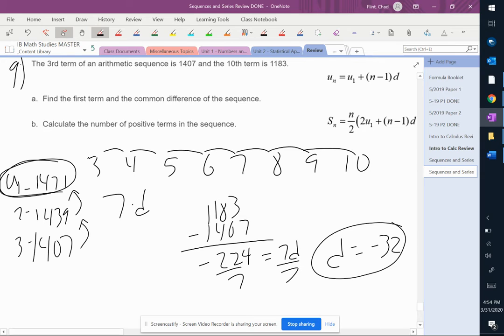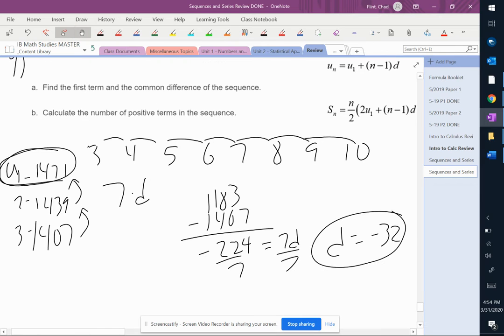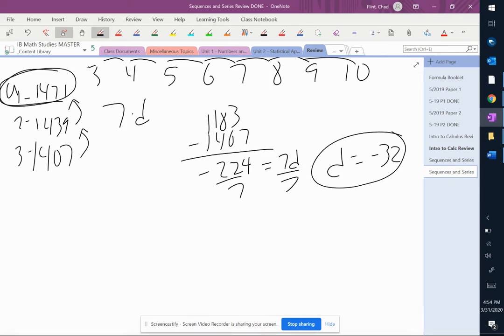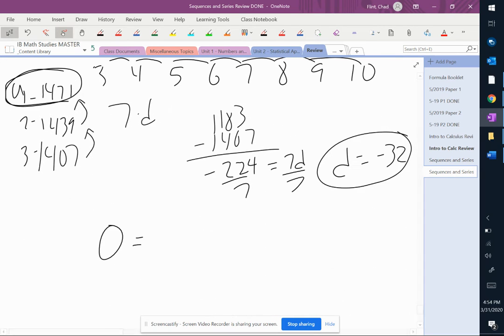And it says calculate the number of positive terms in the sequence. So we want to know when this becomes negative. Let's just find out when it equals 0. So 0 equals U1 is 1471 plus N minus 1 times negative 32.